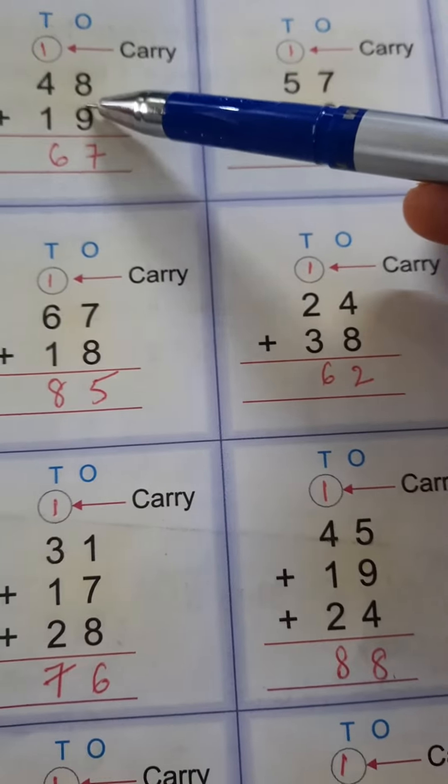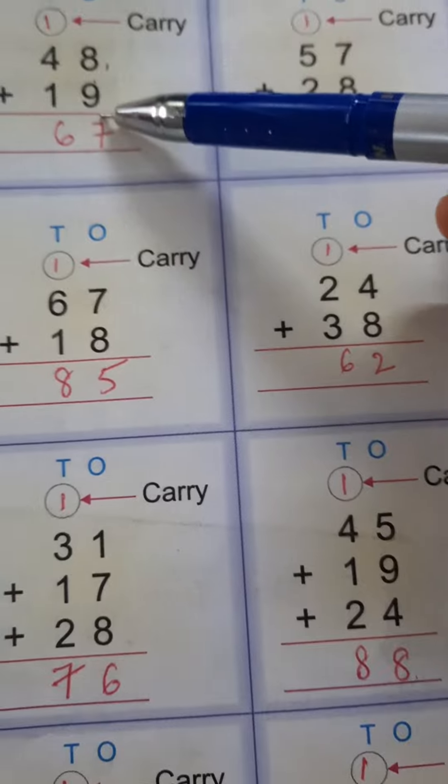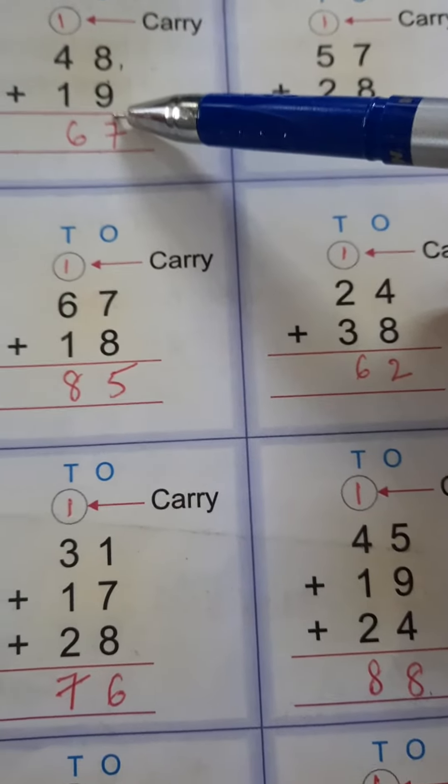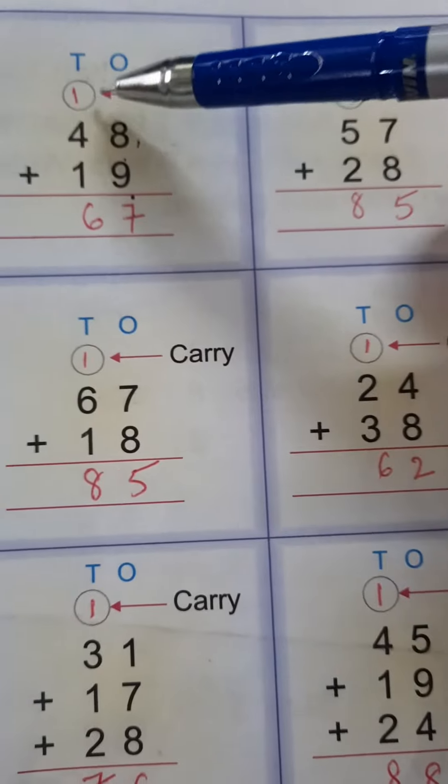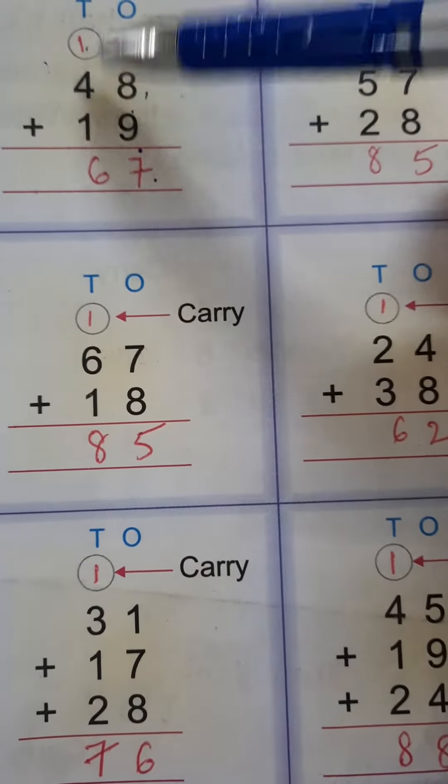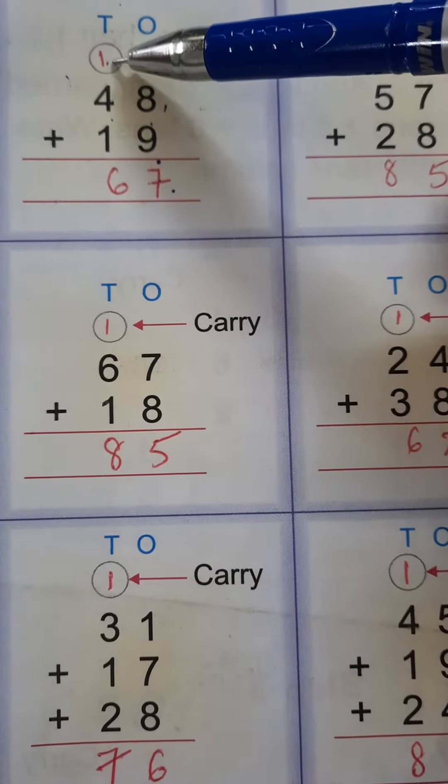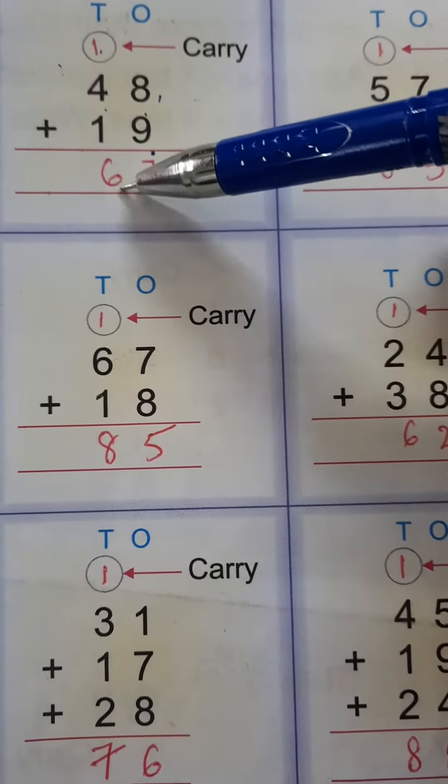8 plus 9: when we add 8 with 9 we get 17. So 1 we are going to carry here and 7 we are going to write here. Now we come to the tens. 4 plus 1 equals 5, 5 plus 1 equals 6. The answer is 67.